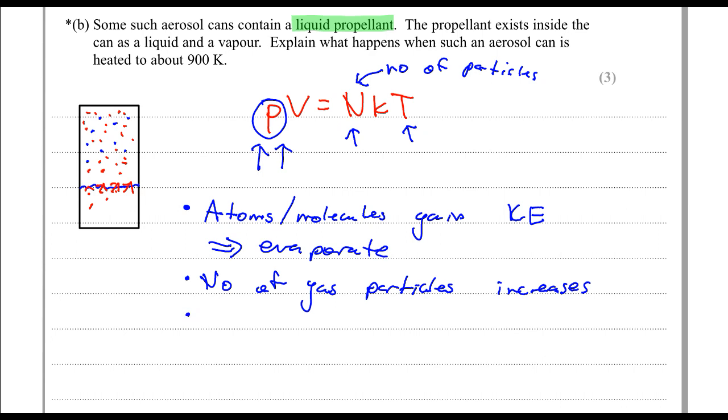Which makes pressure increase due to both rise in T and N. And the result of this would be explosion at a temperature lower than 900 Kelvin.